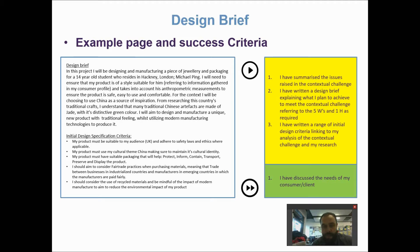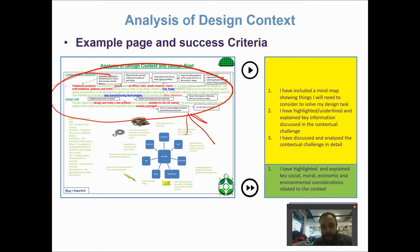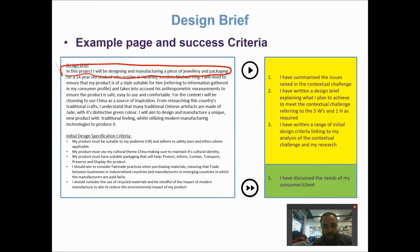Over the course of the year or couple of years that you're studying design technology, what I like to do whenever I start off a project is basically start with a general open statement — basically saying what it is that you're going to be designing and manufacturing. In the case here, he's designed a piece of jewellery and packaging, and again this relates to the criteria he's chosen in the context. It's just literally setting the scene with a very clear statement of what you're going to design and make.